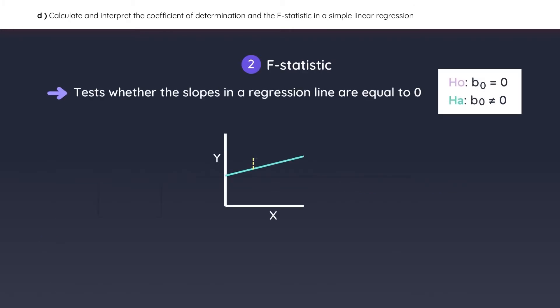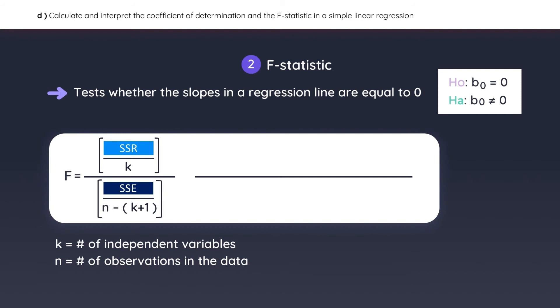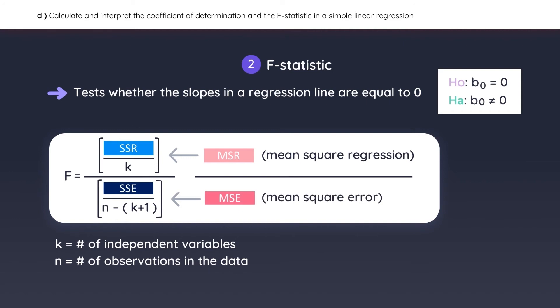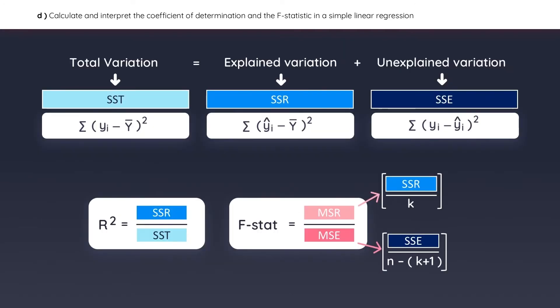The F-statistic tests whether the slopes in a regression are equal to zero. To calculate this test statistic, you use the following formula. The sum of squares regression divided by k is known as MSR, or the mean square regression. The denominator is also known as MSE, or the mean square error. Remember that the higher the F-statistic, the better. In practice, all of these measures are summarized in what's called the ANOVA table.